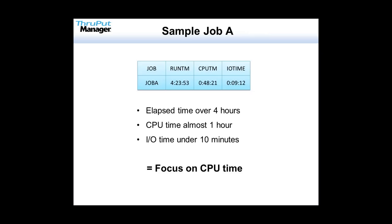Let's start on the application side. Your primary resource for this would be your SMF 30 records, where you can measure the time each application ran. For sample job A, I've got a total runtime of four hours and 23 minutes. Of that, the CPU time was 48 minutes and the IO time was nine minutes. Thinking about this intuitively — I ran for over four hours, my CPU time was almost an hour of that, and my IO time was under ten minutes. So it's not practical to look at the IOs; I want to focus on the CPU time.